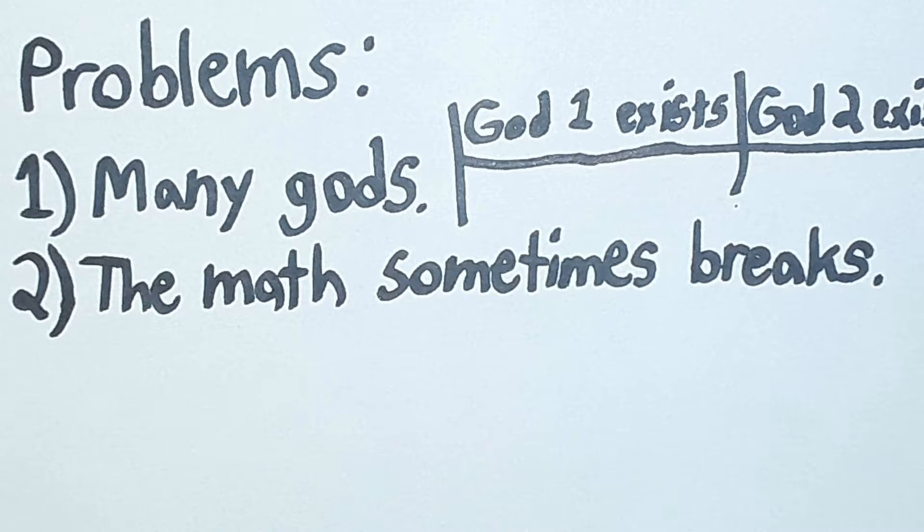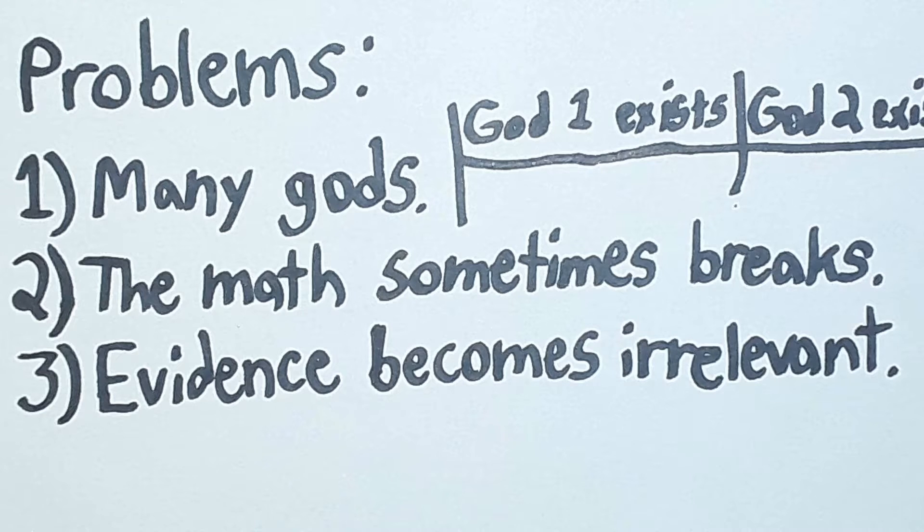The next objection against Pascal's wager is that the math with the infinities sometimes breaks down. More on that later. The next argument is that if you accept the logic of Pascal's wager, then you don't care about evidence at all, which sounds very dishonest.